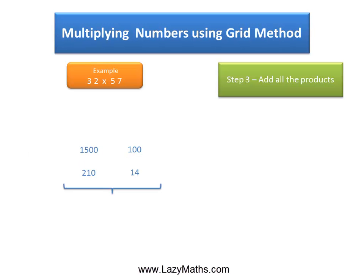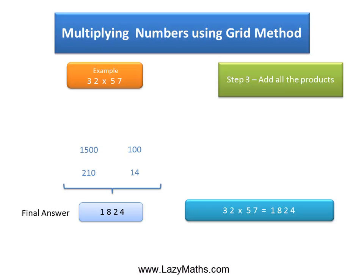So we add these numbers together: 1500 plus 100 plus 210 plus 14 gives us 1824, and this becomes the final answer. So 32 times 57 equals 1824. Thank you.